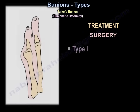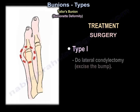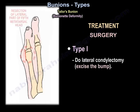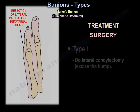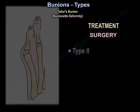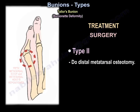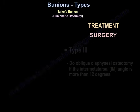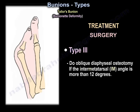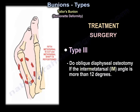In type one deformity, treatment involves lateral condylectomy — meaning excision of the bump. In type two, a distal metatarsal osteotomy is performed. In type three, an oblique diaphyseal osteotomy is done if the intermetatarsal angle is more than 12 degrees.